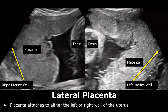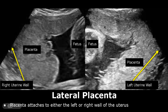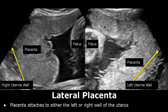A lateral placenta is attached to either the left wall or the right wall of the uterus. This position is less common than other placental positions. In this image, the placenta is attached to the right wall of the uterus, and in this image, it is attached to the left wall of the uterus.